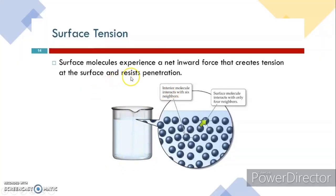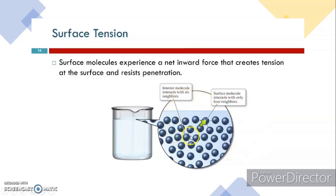Surface molecules experience a net inward force that creates tension at the surface and resistance to penetration — that is the good example of condensed milk. An interior molecule interacts with six neighbors like a network or web, while a surface molecule interacts with only four neighbors.